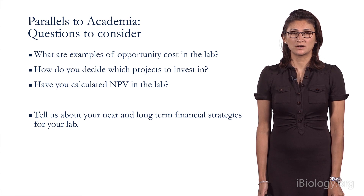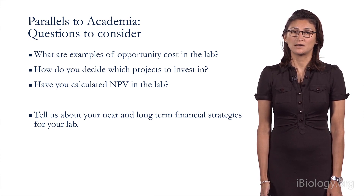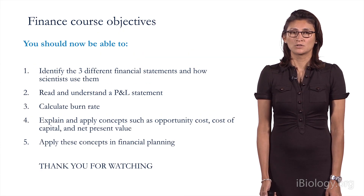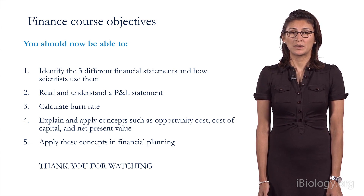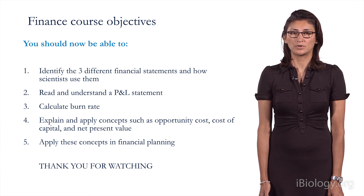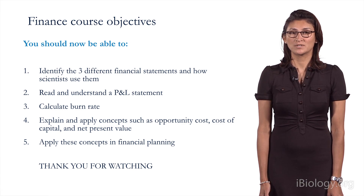Here are a few scenarios to consider in terms of parallels to academia. I would strongly encourage you to view Amy's presentation — she will talk about examples of opportunity costs in the lab and walk through NPV and how she's decided which projects to invest in based on her experience. For finance course objectives, by now you should be able to identify the three different financial statements and how scientists use them, read and understand a P&L statement, calculate burn rate, explain and apply concepts such as opportunity costs, cost of capital, and NPV, and apply these concepts in financial planning. Thank you for watching our presentations.